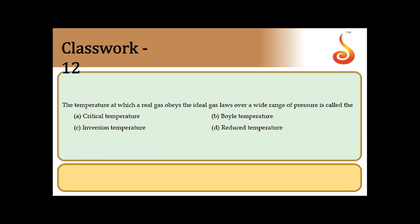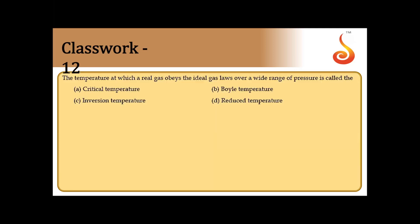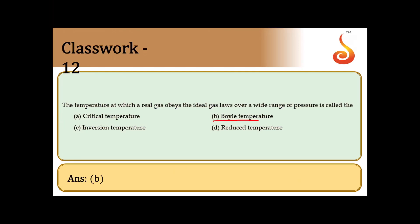Question 12: The temperature at which a real gas obeys ideal gas behavior over a wide range of pressure is called Boyle temperature. Answer is option B.